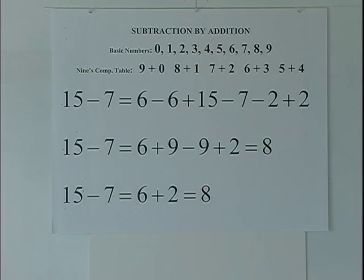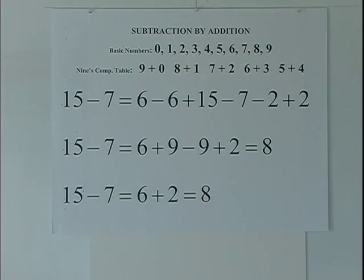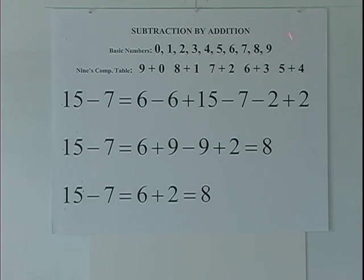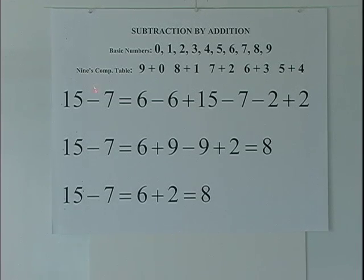Each number in a pair is the nine's complement of the other. The nine's complement of nine is zero; of zero is nine. The nine's complement of eight is one; of one is eight. The nine's complement of five is four; of four is five. Those are the five pairs, and we can refer to this table or do it mentally.